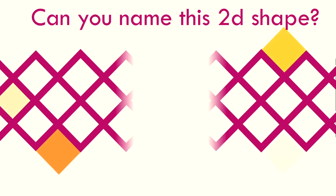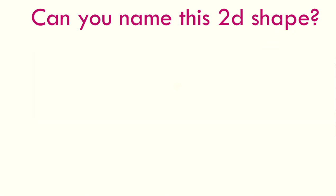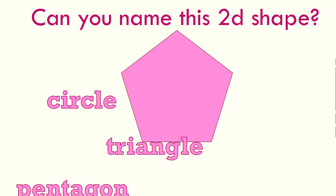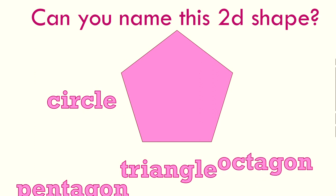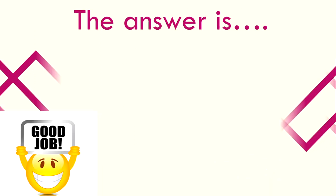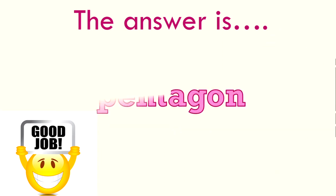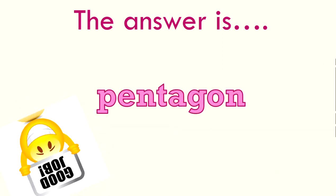Can you name this 2D shape? It's a five-sided shape. Is it a circle? A square? A rectangle? Or an octagon? The answer is a rectangle. Well done.